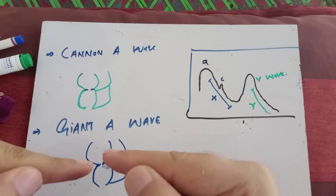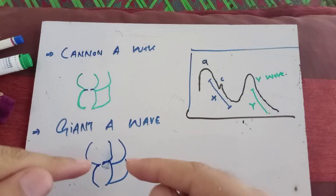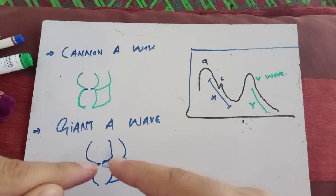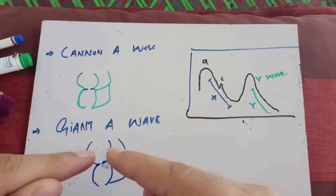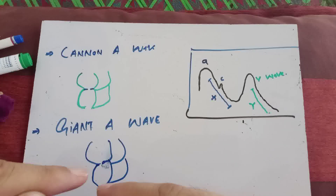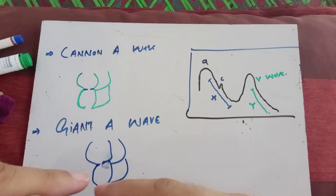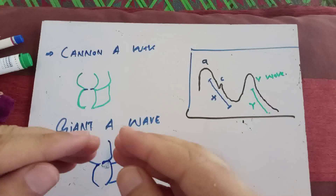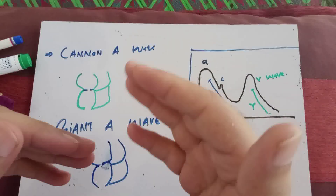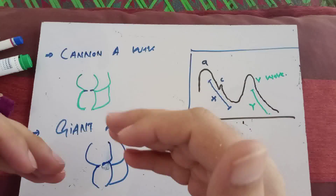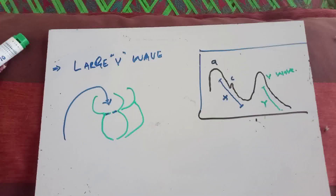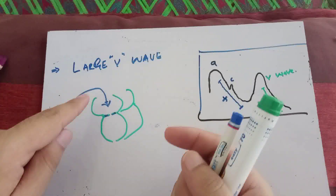In the giant A wave, the rhythm is normal but you have a stenosed tricuspid valve. When the atria contract against the stenosed tricuspid valve, the amount of blood leaving the right atrium into the right ventricle is less. If less blood goes down, a large proportion of blood moves towards the neck and produces a tall wave — but less tall compared to the cannon A wave. That is the giant A wave.